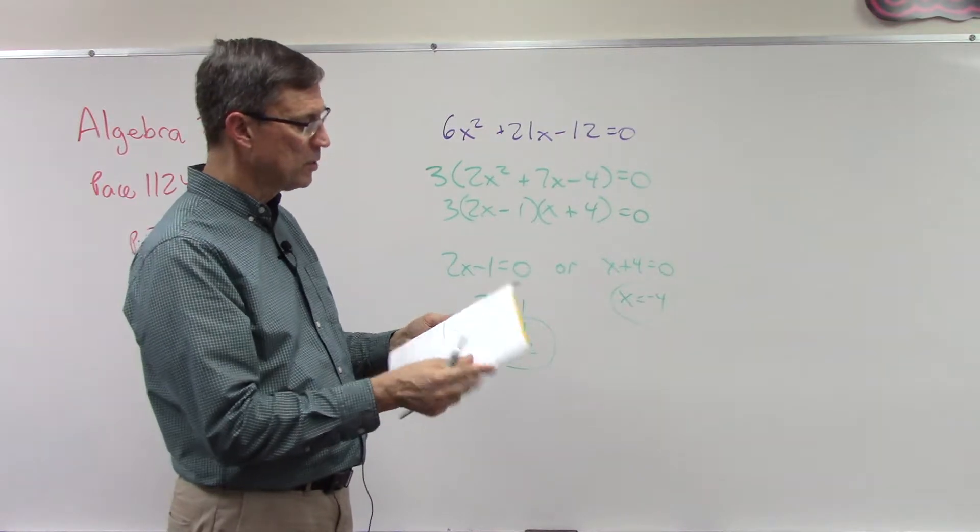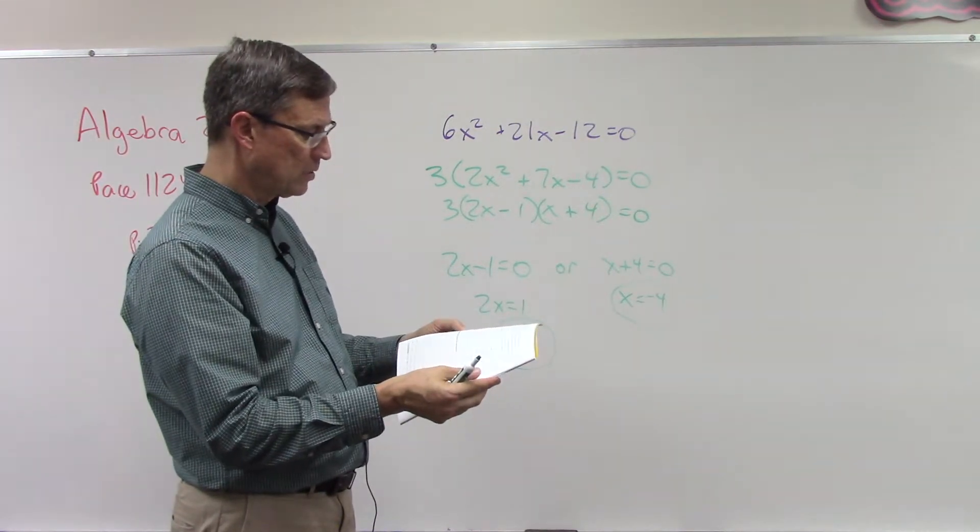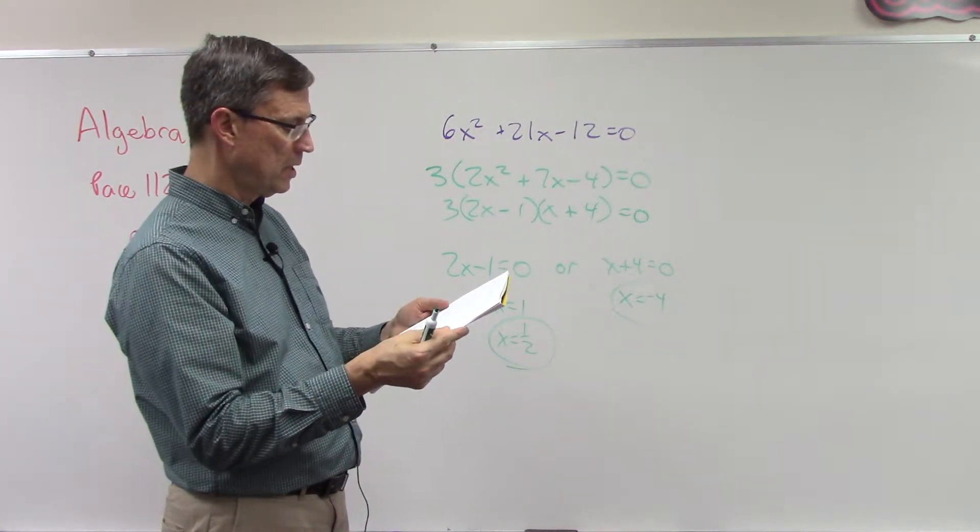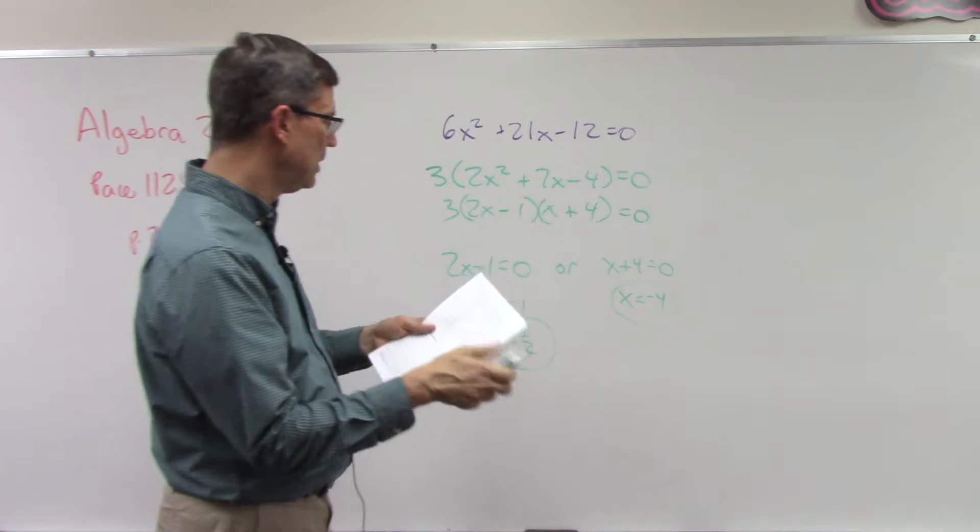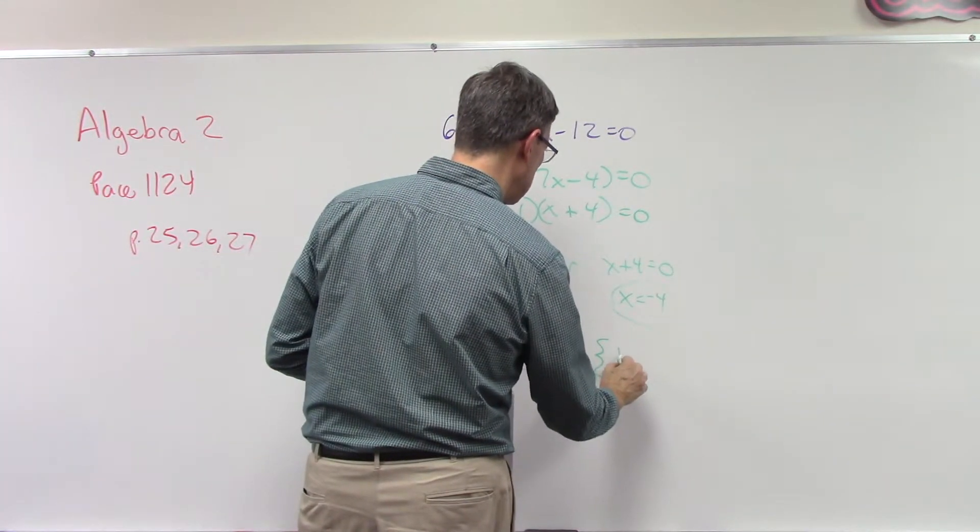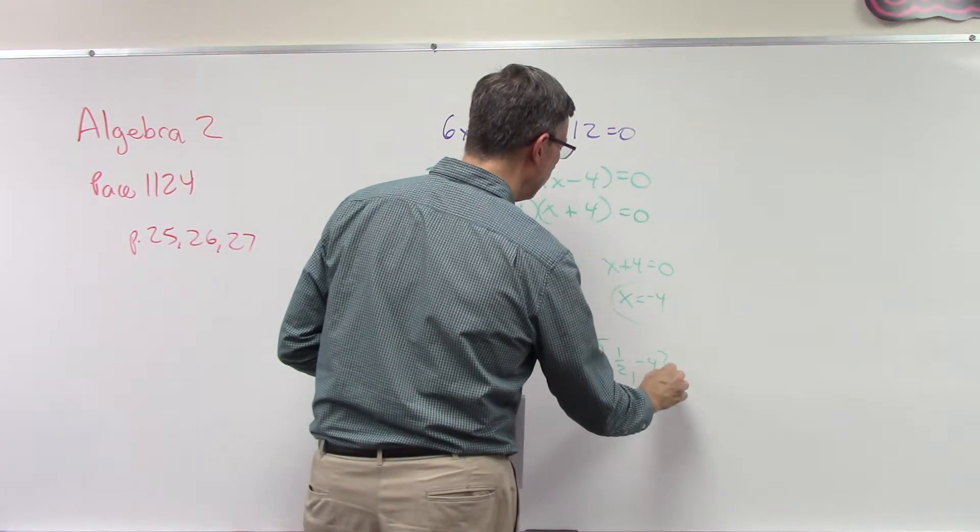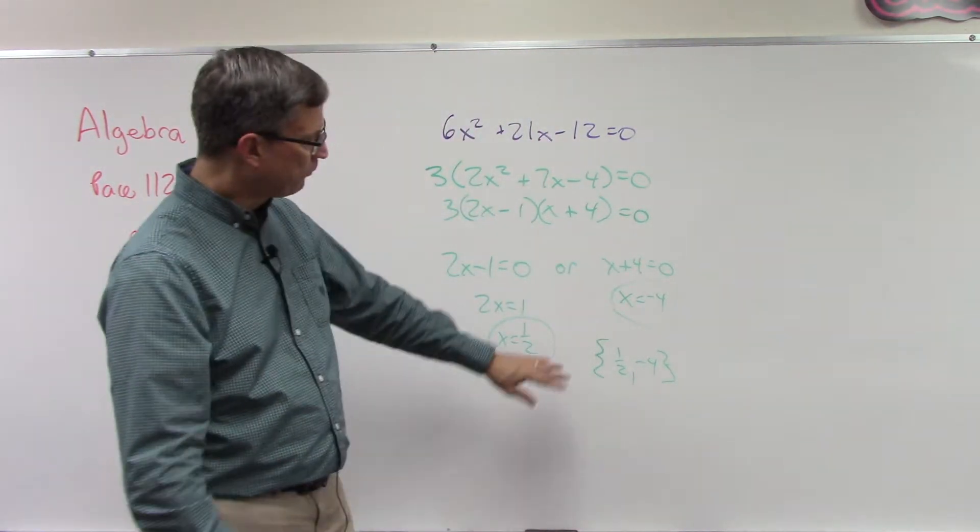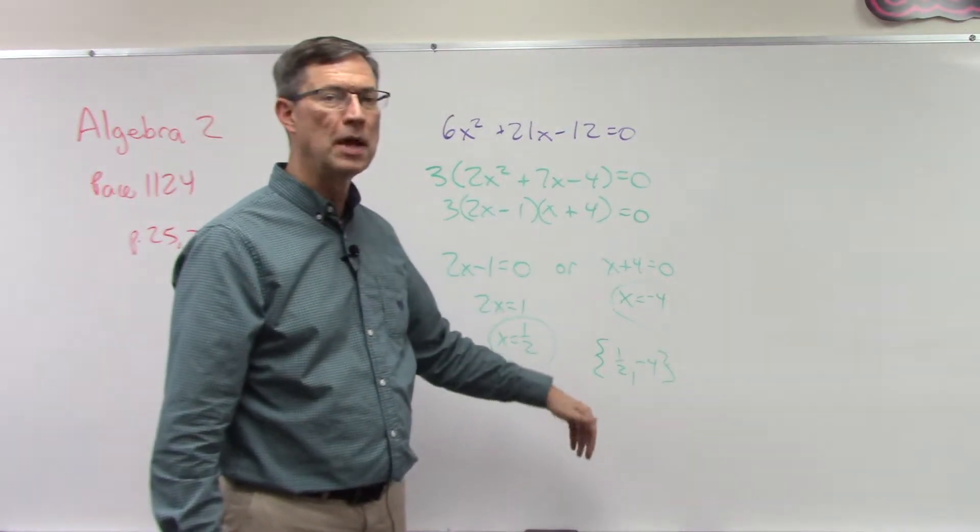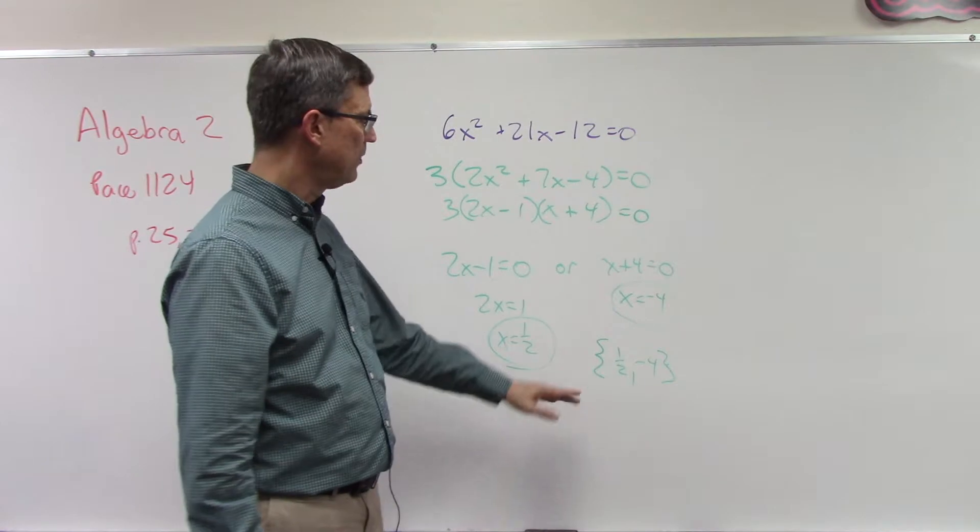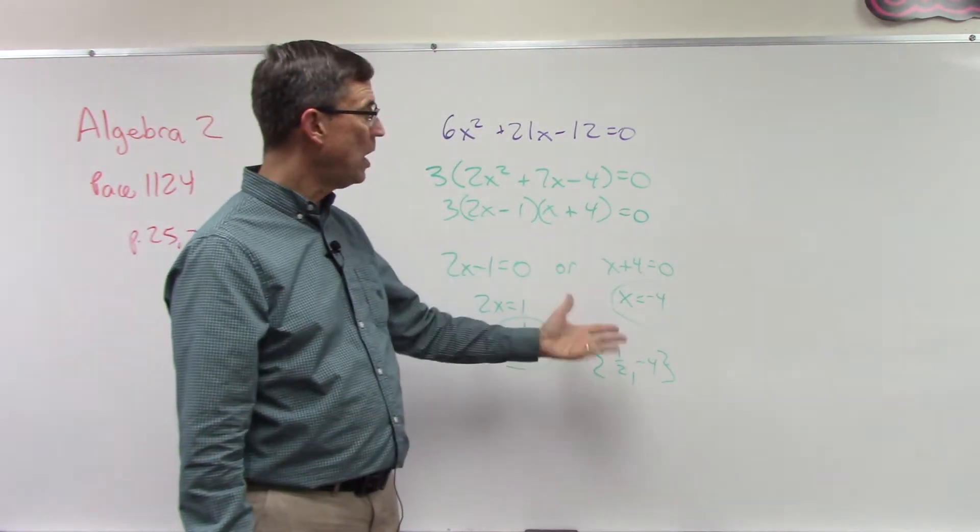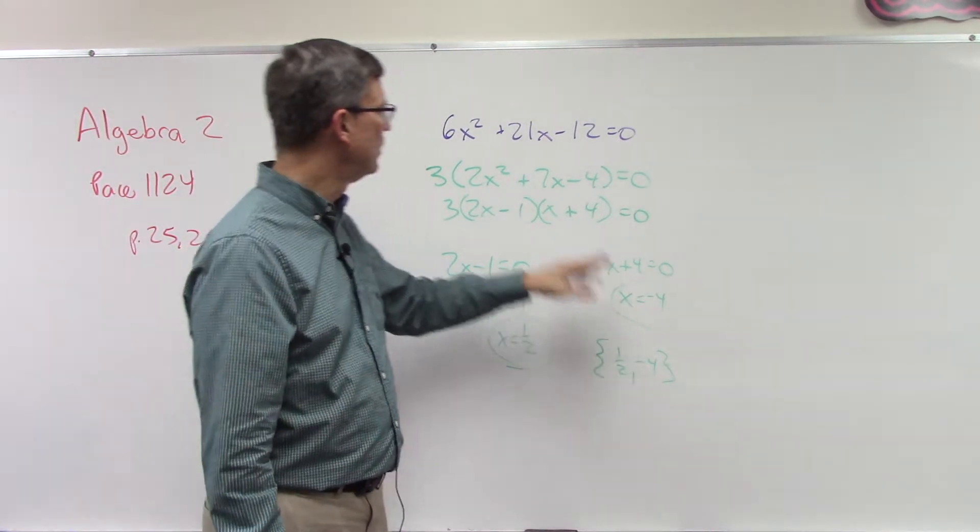Notice now I have two answers for x. I have solved this to solve for x, and the directions... that's called finding the solution set. And it looks like in the answer key they do it in brackets like this, like a solution set: one-half comma negative four. Notice this is not parentheses, this does not represent an x and a y value, it's not a point on a graph. These are two different numbers that would satisfy this equation.